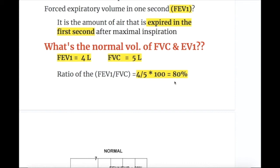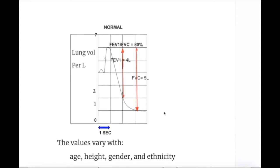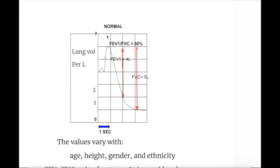The normal FEV1/FVC ratio is 80%, but may range from 80 to 120%. On the spirometry graph, each square represents one second, so FEV1 in one second is 4 liters and the total forced vital capacity is 5 liters — giving 4 divided by 5 times 100, which equals 80%.